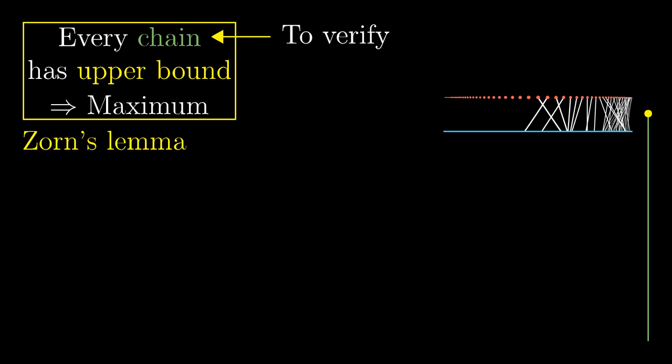Conversely, imagine the union was not a partial matching, so two different edges meet at a single node. Both edges came from certain elements in the chain. But then the union of just those two elements is not a partial matching, which contradicts the fact that every two elements in the chain are comparable — their union should simply be the bigger matching. This way we have verified the condition and we are done.